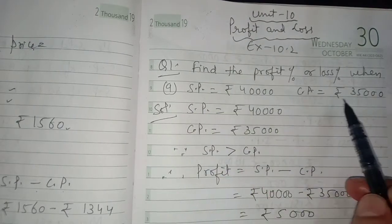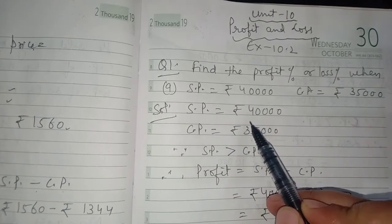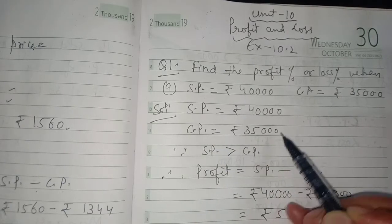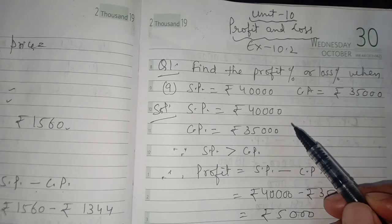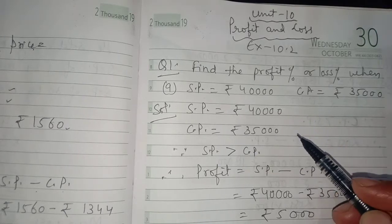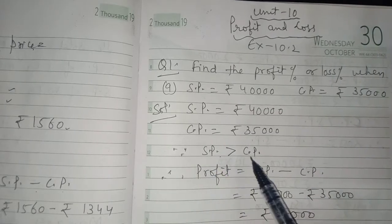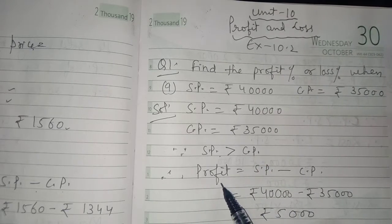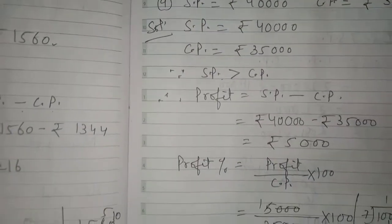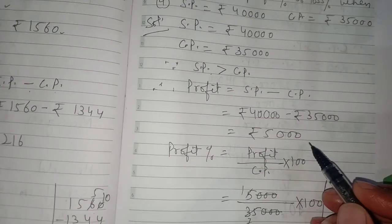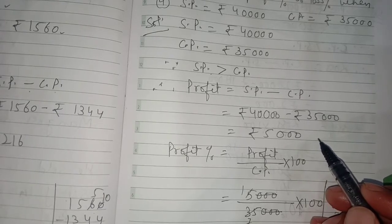In Part A, SP is given as rupees 40,000 and CP is given as rupees 35,000. We need to compare whether CP is greater or SP is greater. Here SP is greater than CP, so there will be profit. Profit equals SP minus CP, and subtracting gives us rupees 5,000 as the profit.